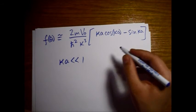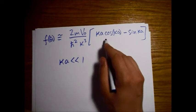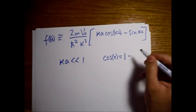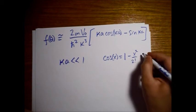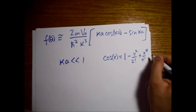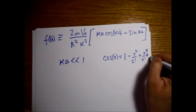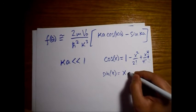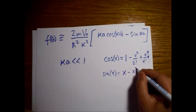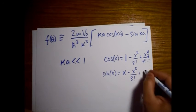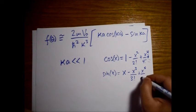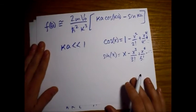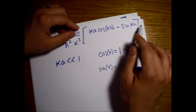Looking at the expansions: cosine of x equals 1 minus x squared over 2 factorial plus x to the fourth over 4 factorial minus... and so on. Sine of x equals x minus x cubed over 3 factorial plus x to the fifth over 5 factorial minus... and so on.